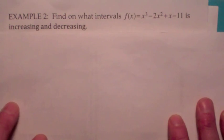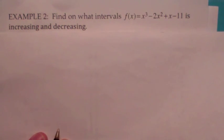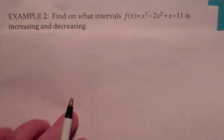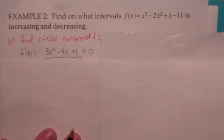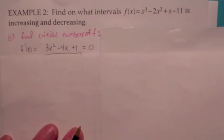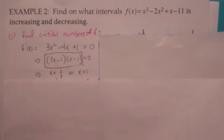In this example we have a polynomial function, and the question is where is this function increasing and decreasing — in other words, where is the derivative greater than 0 and where is the derivative less than 0? A convenient way to answer that is to find where the derivative equals 0, which gives us the critical numbers. Take the derivative, set it equal to 0, factor it, and you get two answers: x equals 1/3 or x equals 1.